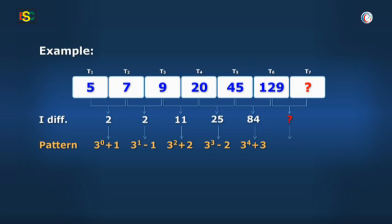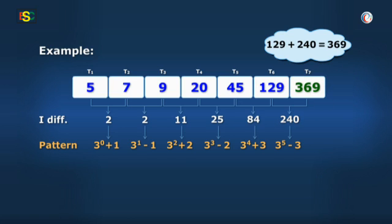Oh sir, it will be 3 to the power 5 minus 3. Right, and that will be 243 minus 3 equal to 240. And so, the required term in the given sequence will be 129 plus 240 equal to 369.